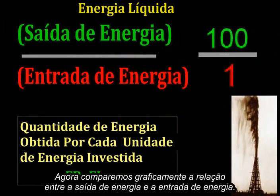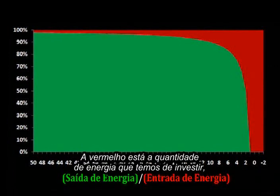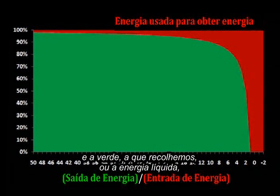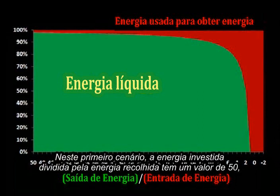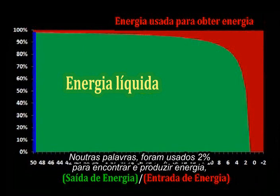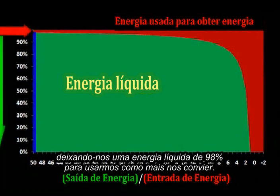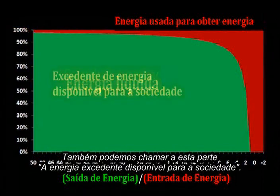Let's make this visual by graphically comparing the relationship between energy out and energy in. The red part is the amount of energy we have to put in, and the green part is how much we got out, or the net energy, displayed such that they sum to 100%. In this first scenario, the energy out divided by energy in yields a value of 50, meaning one unit of energy was used to find and produce 50 units. In other words, 2% was used to find and produce energy, leaving us a net 98% to use however we see fit. We could also call this the surplus energy available to society.